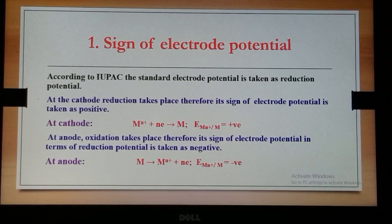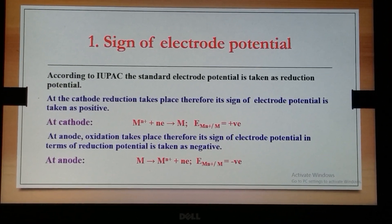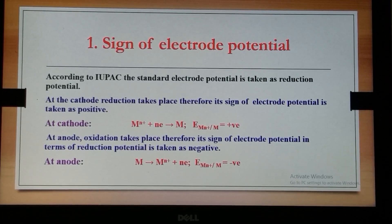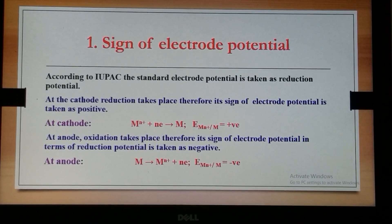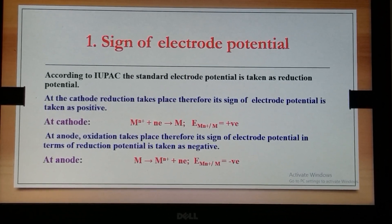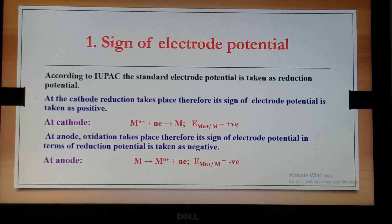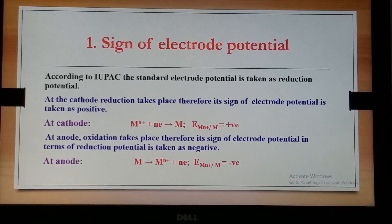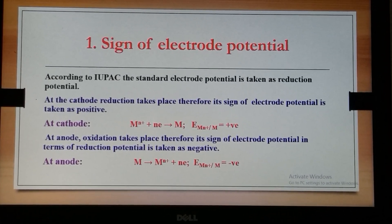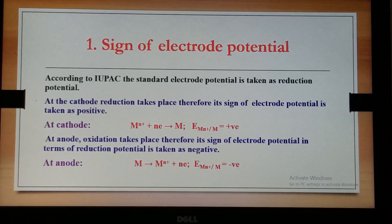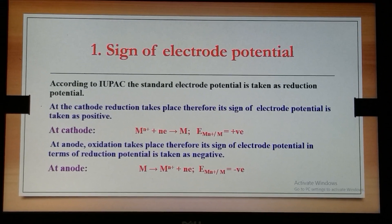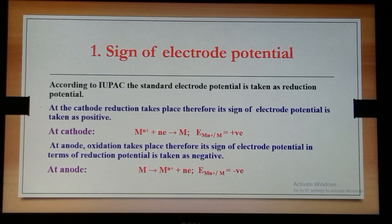The standard electrode potential is taken as the reduction potential. Therefore at the cathode, because reduction takes place there, its sign is taken as positive.